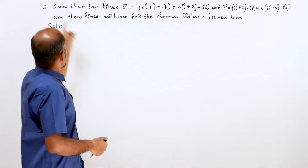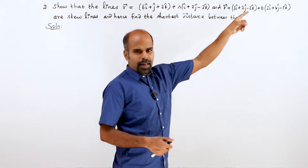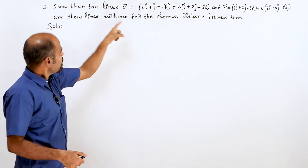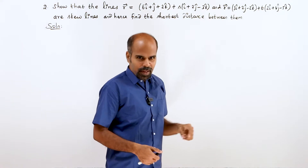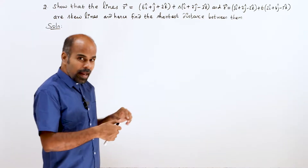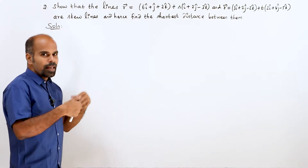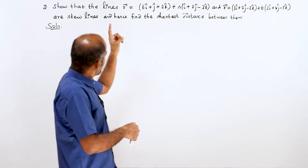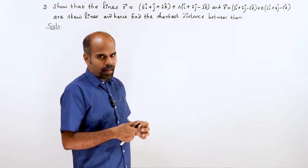Second question: show that the two lines are skew lines, and hence find the shortest distance between them. We need to prove the lines are skew lines and find the shortest distance between them.